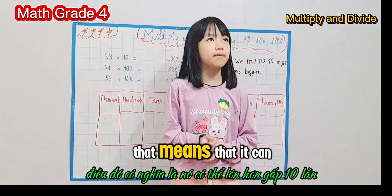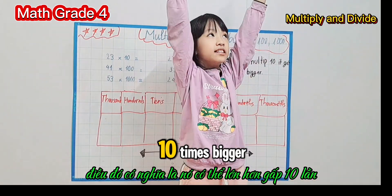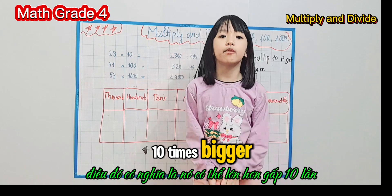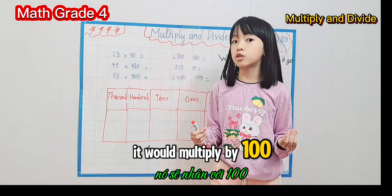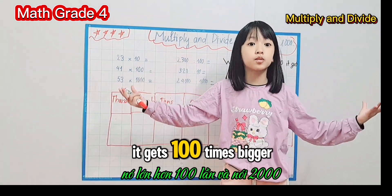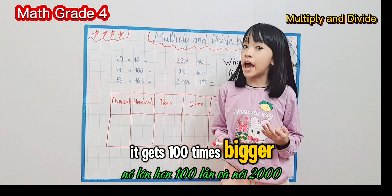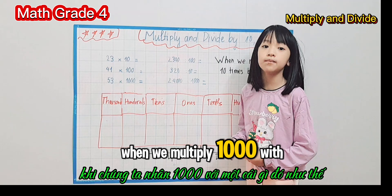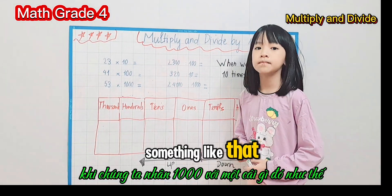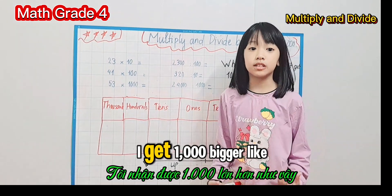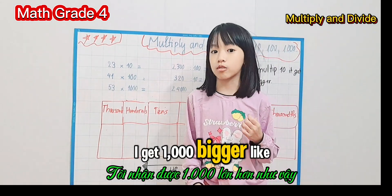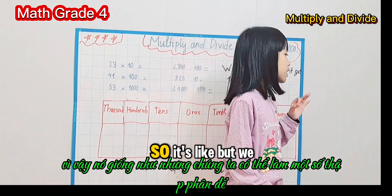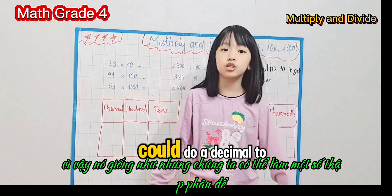When we multiply something by 10, it gets 10 times bigger. When we multiply by 100, it gets 100 times bigger. And when we multiply by 1000, it gets 1000 times bigger — like that.